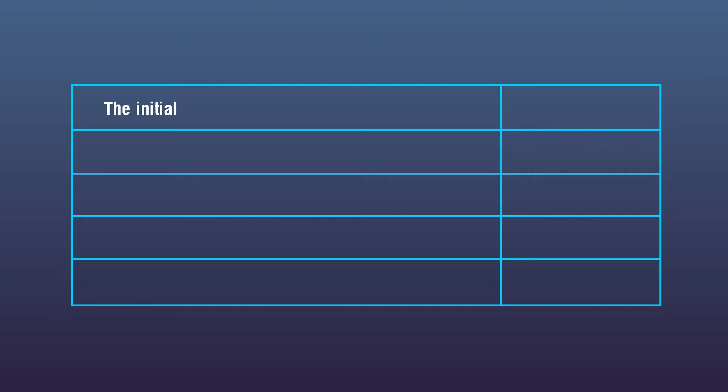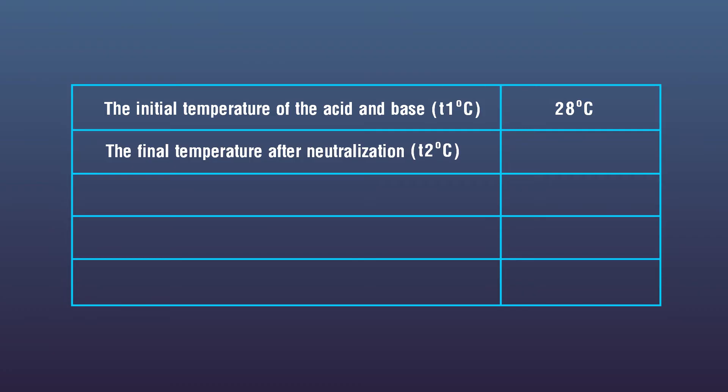Observation: the initial temperature of the acid and base T1 degrees Celsius. The final temperature after neutralization T2 degrees Celsius, 40 degrees Celsius. Change in temperature delta T equals T1 minus T2 degrees Celsius.